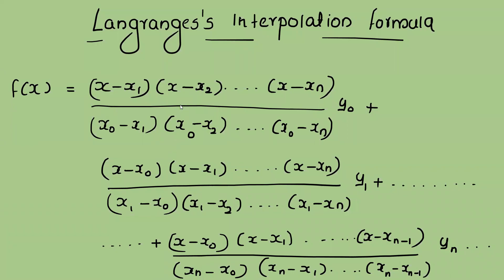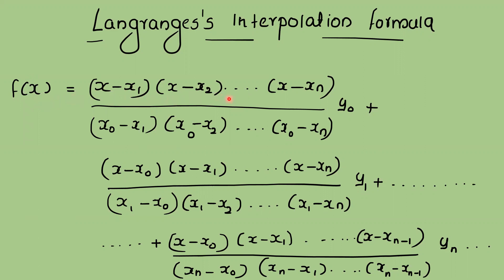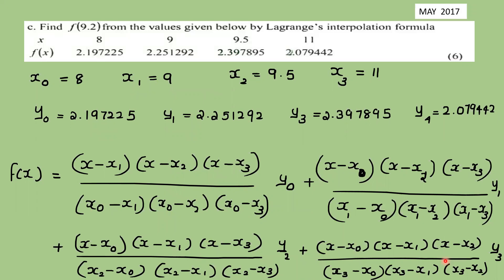Lagrange's interpolation formula: the general form sums terms where each term is the product of y_i and a basis polynomial. Each basis is formed as the product of (x - x_j) for all j not equal to i, divided by the product of (x_i - x_j). The final term uses x_n and y_n.